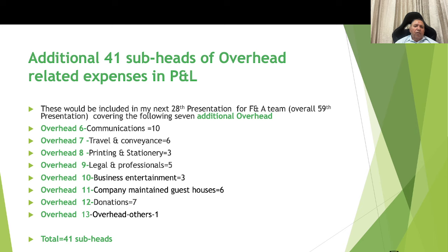Additional 14 subheads of overhead-related expenses in the P&L account will be covered in the next presentation for the finance and accounts team. Overhead number 6: communication — 10 subheads. Overhead number 7: travel and conveyance — 6 subheads. Overhead number 8: printing and stationery. Overhead number 9: legal and professional — 5 subheads. Overhead number 10: business entertainment — 3 subheads. Overhead number 11: company-maintained guest houses. Overhead number 12: donations — 7 subheads. Overhead number 13: other overheads not included elsewhere. Total: 41 subheads to be covered in the next presentation.